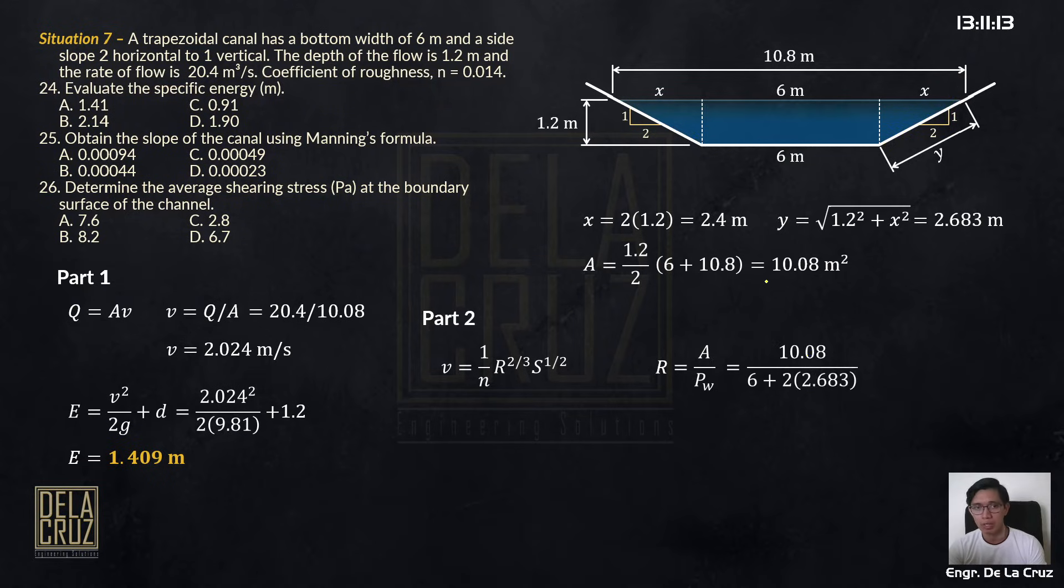So let's substitute. The area is 10.08. And the wetted perimeter is 6 plus 2 times the value of y, 2.683. We have 0.887 meters.